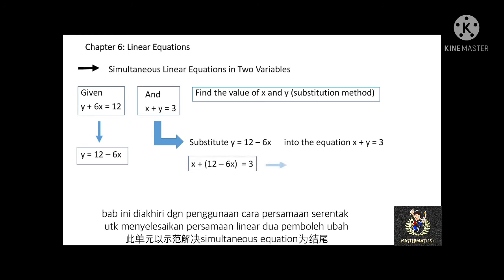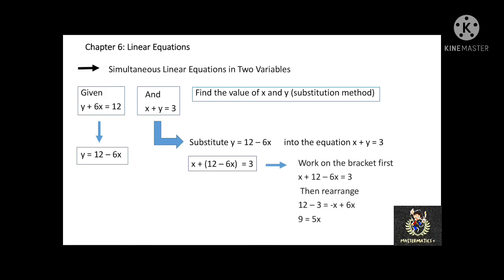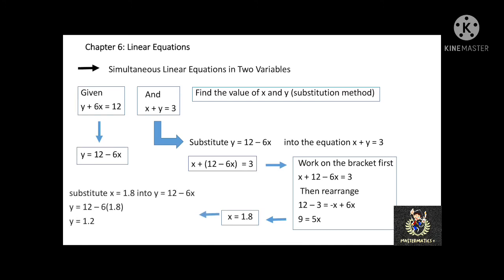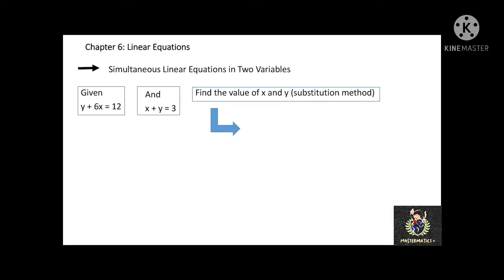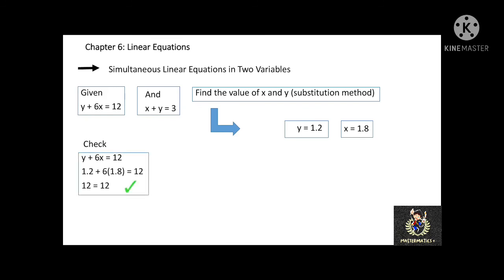We work on the bracket first, which results in x plus 12 minus 6x equal to 3. Then rearrange: numbers on the left-hand side and variables on the right-hand side — 12 minus 3 equal to negative x plus 6x — and simplify into 9 equal to 5x. To determine the value of x, divide 9 by 5, which equals 1.8. Now substitute x equal to 1.8 into the equation y equal to 12 minus 6x, and this results in y equal to 1.2.